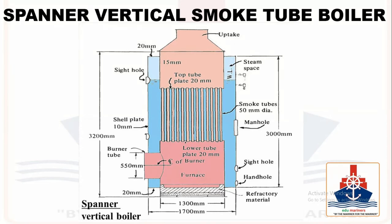Friends, the vertical smoke tubes are a patent design known as swirl flow tubes. They have a special twist along the greater part of their length, with only a short plain portion at each end left to allow for expansion.